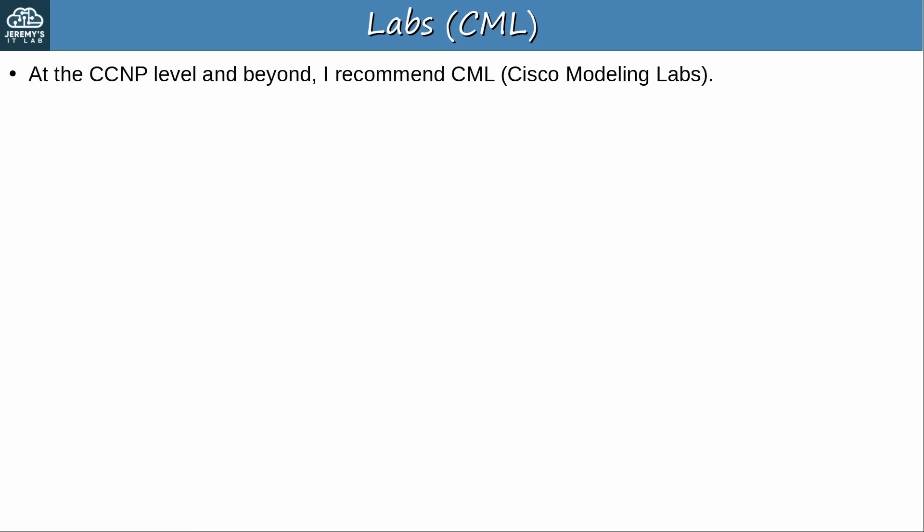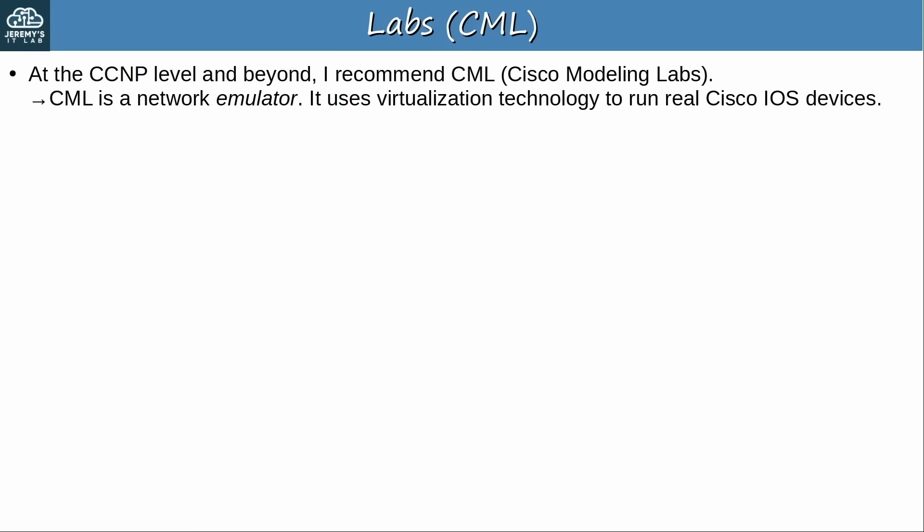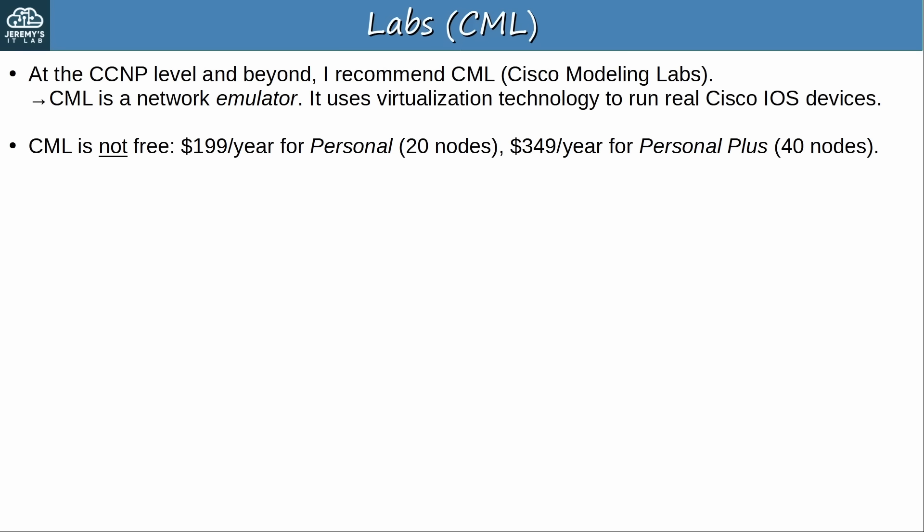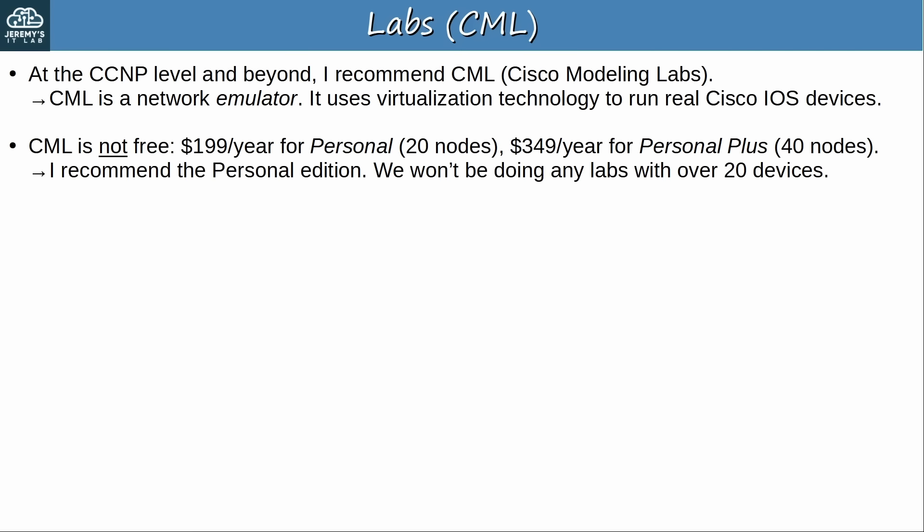At the CCNP level and beyond, I recommend CML for labs. Buying actual network hardware is an option too, but in most cases that would be a lot more expensive than CML and a lot less convenient. CML is a network emulator, meaning it uses virtualization technology to run real Cisco IOS devices on your PC. CML is not free — a personal license costs $199 a year, and a personal plus license costs $349 a year. The personal license allows for up to 20 nodes, and I recommend the personal edition, as we won't be doing any labs with over 20 devices in this course.